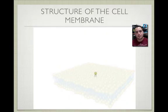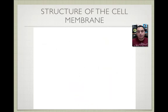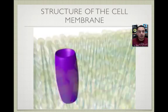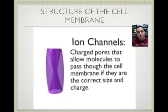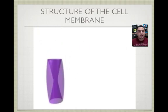The structure of the cell membrane includes the lipid bilayer with phospholipids. They have a hydrophilic head that loves water, and a hydrophobic tail that doesn't. There are ion channels — proteins that allow charged molecules, positive or negative, to pass through. If molecules aren't the right size, they can't get in.